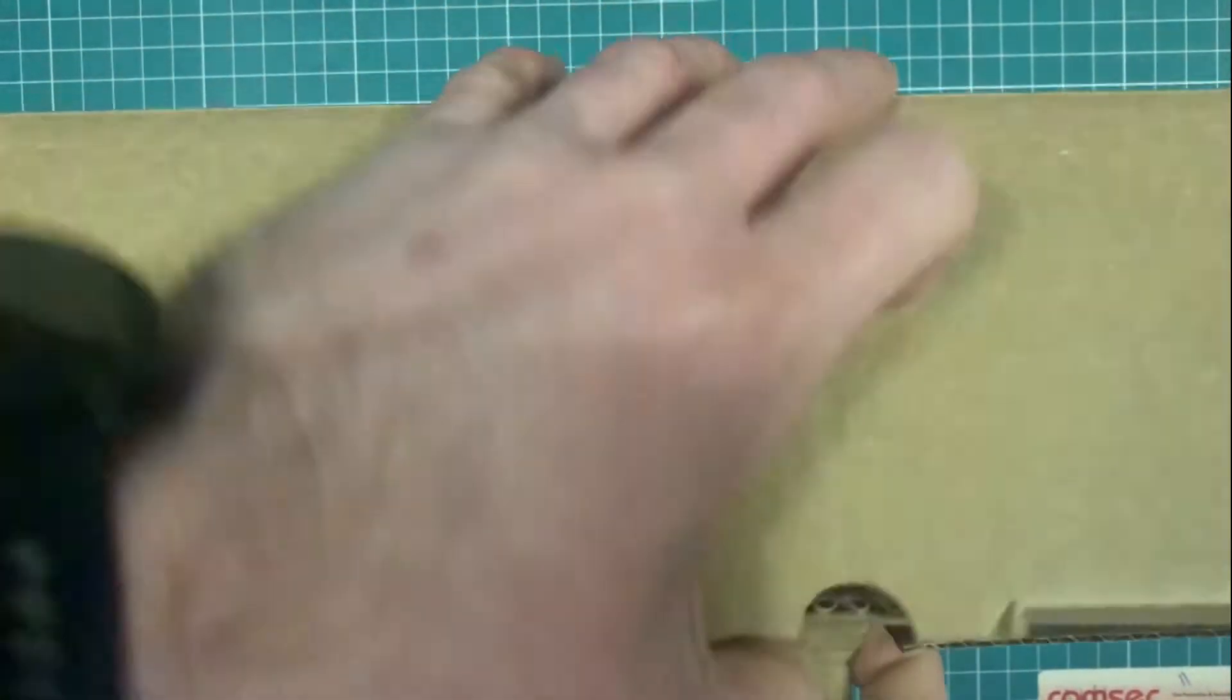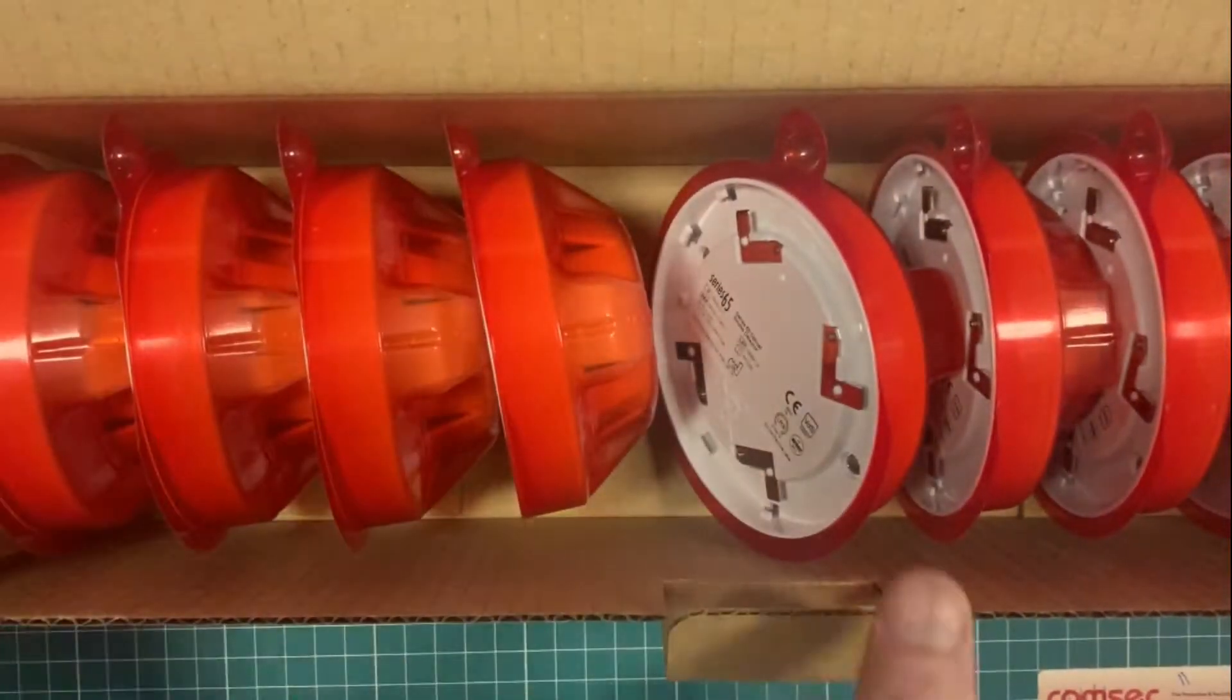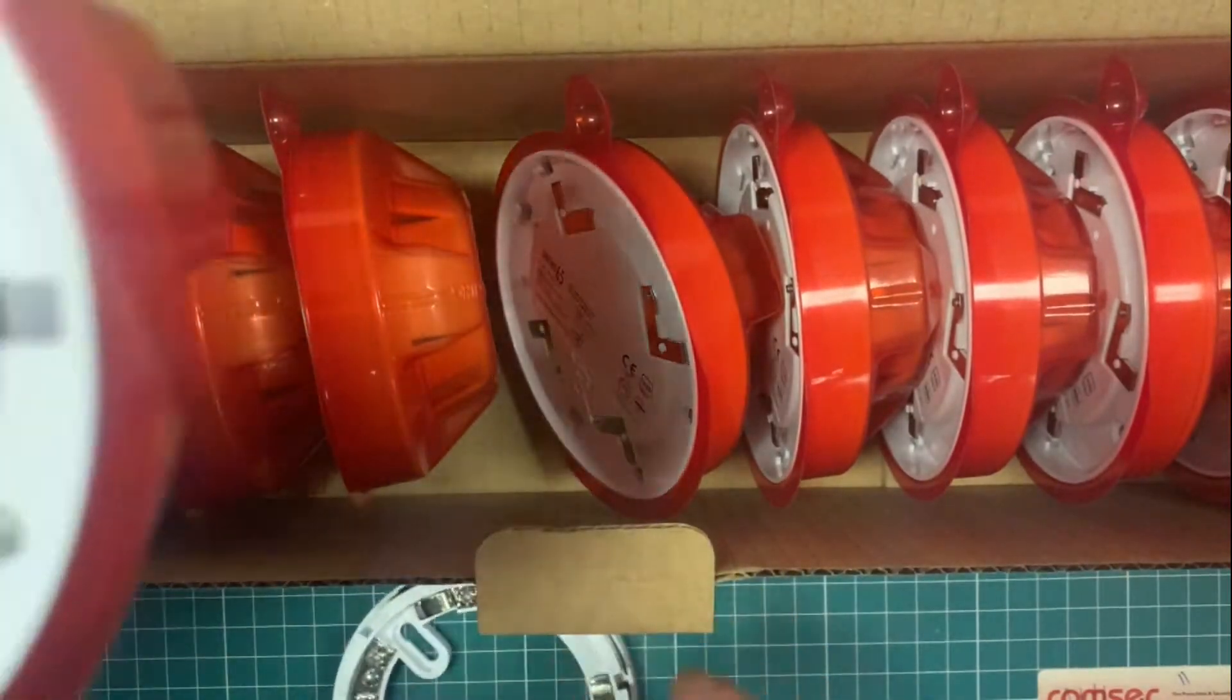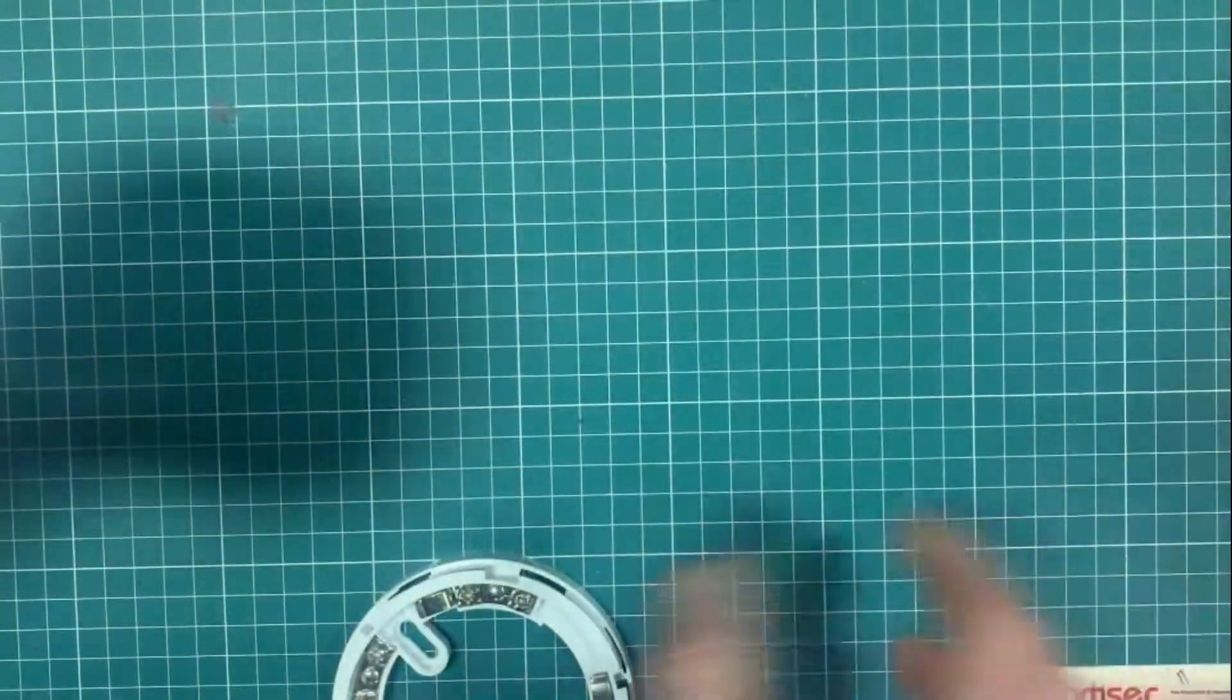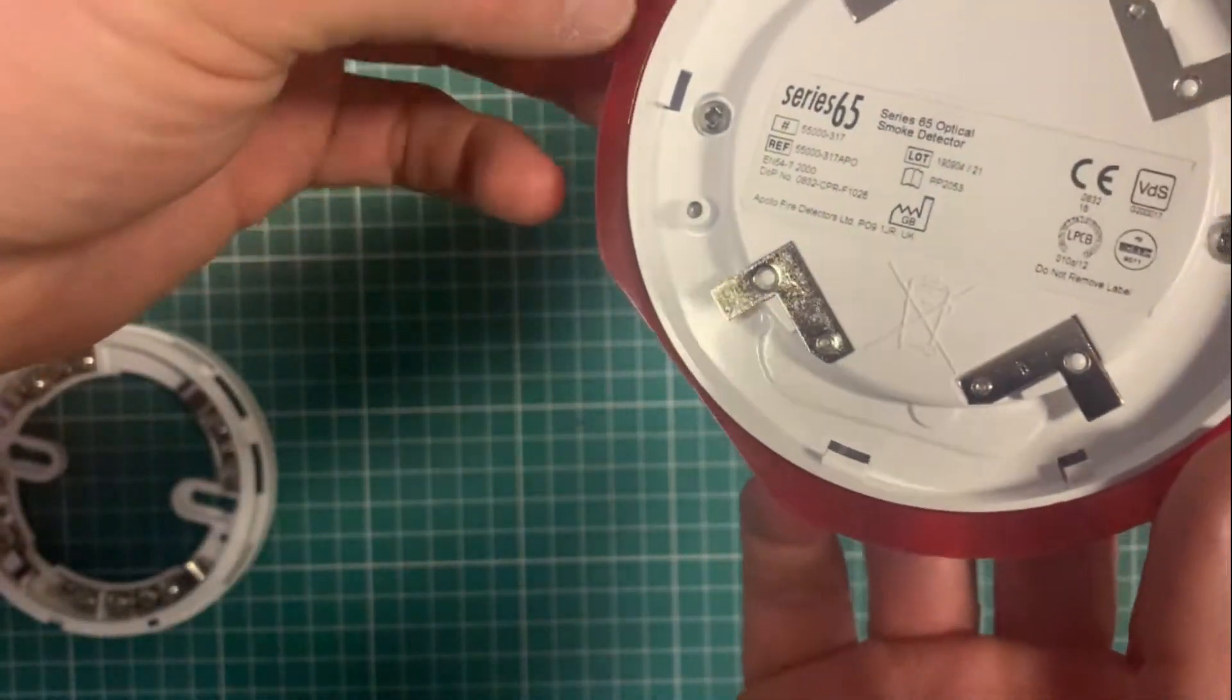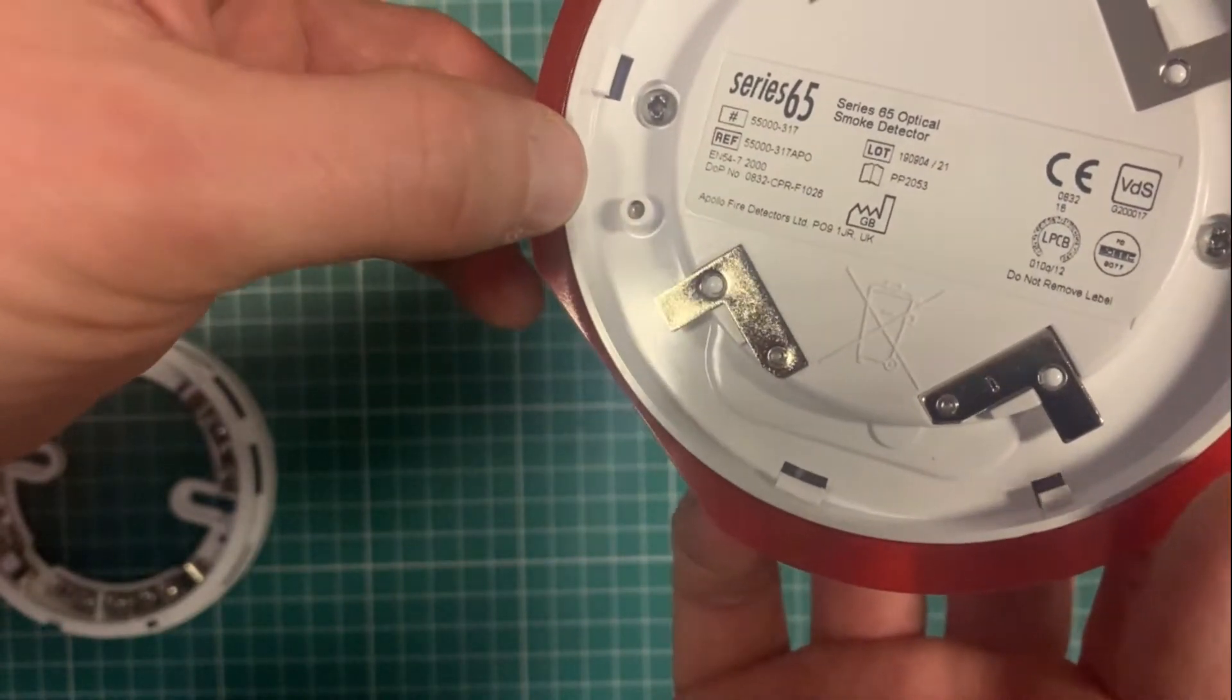The Series 65 optical smoke detector. When these ship, they come in boxes of 10, but we supply and ship them as individual units. If we're ordering 10, they come in a full box like that. This is the Series 65 optical smoke detector, Apollo part code 55000317APO.